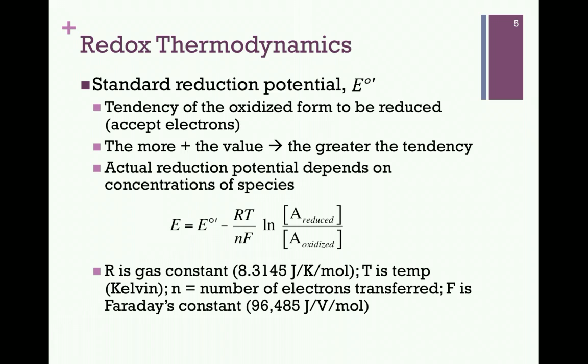Our goal is to find some kind of quantitative measure that will allow us to predict the flow of electrons, and that value is the standard reduction potential, or E naught prime. Recall that the superscripts naught prime simply signify that the quantity was determined under conditions of biochemical standard state, and the symbol E signifies the reduction potential. It is a quantitative measure of the tendency of the oxidized form of the molecule to be reduced. In other words, how likely is it for this molecule to accept electrons? The more positive that value, the greater the tendency.